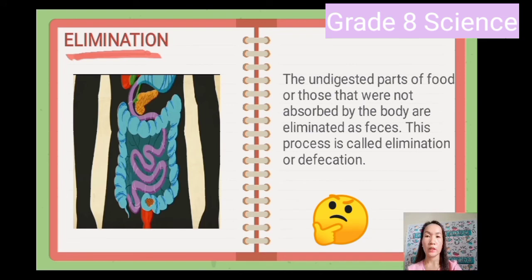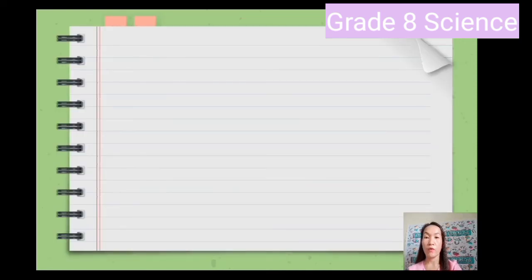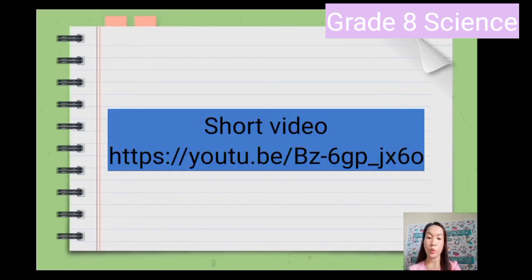Elimination: the undigested parts of food, or those that were not absorbed by the body, are eliminated as feces. This process is called elimination or defecation. To help you visualize the process, here is a short video that shows the process of digesting food.